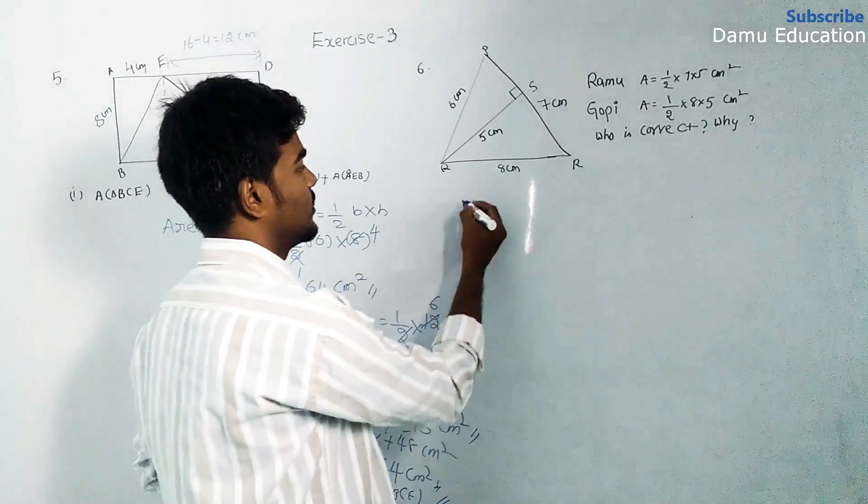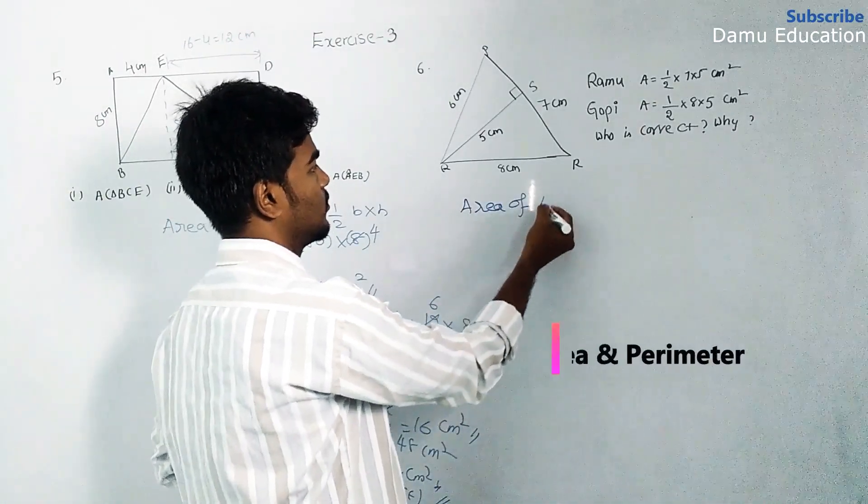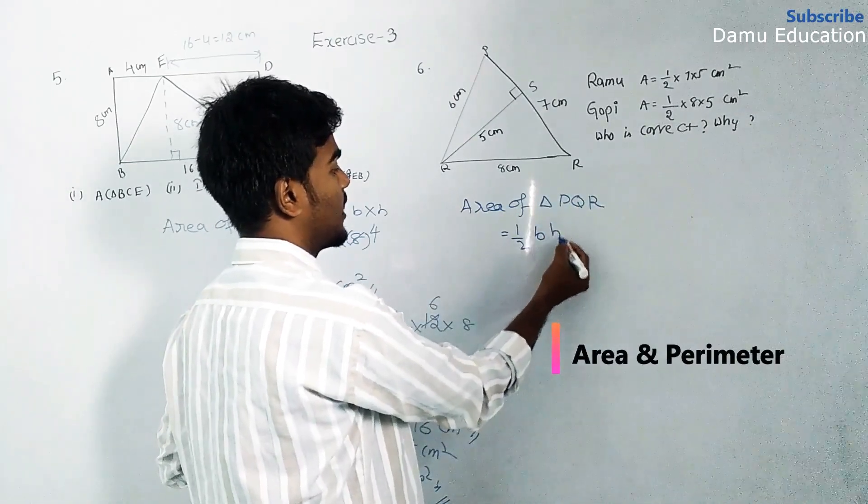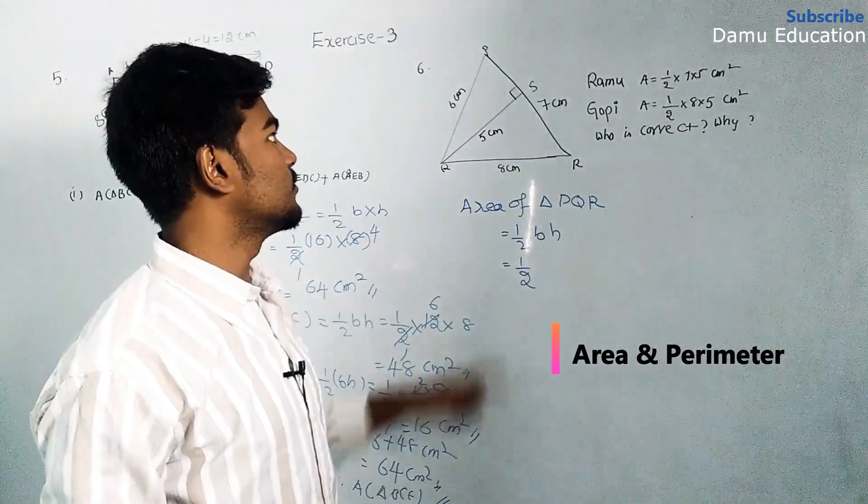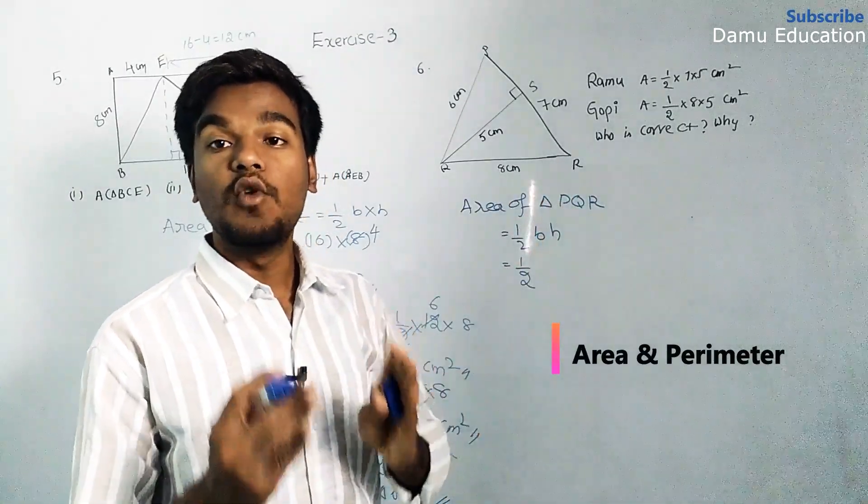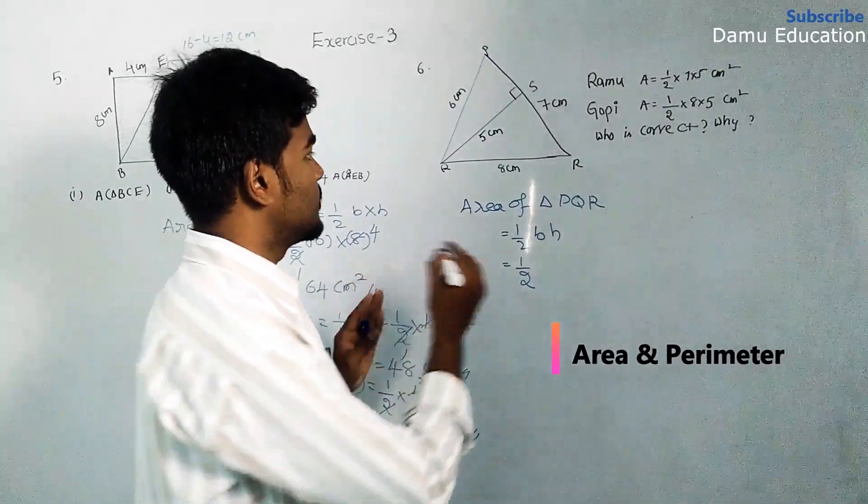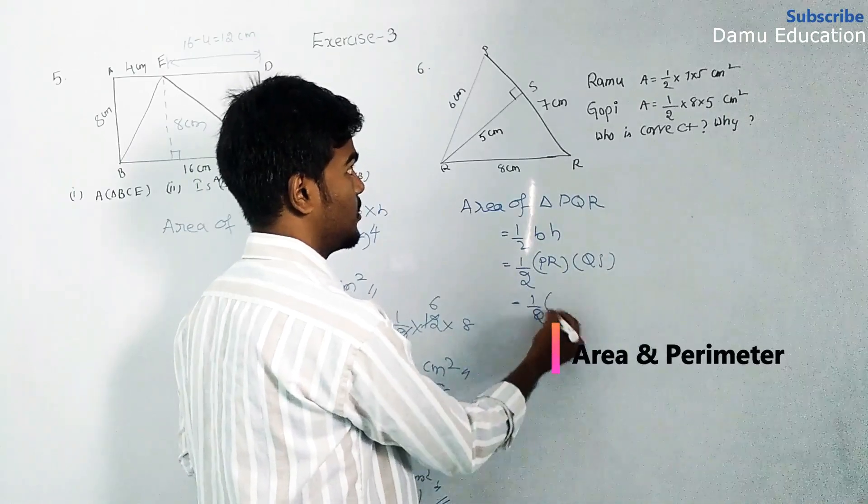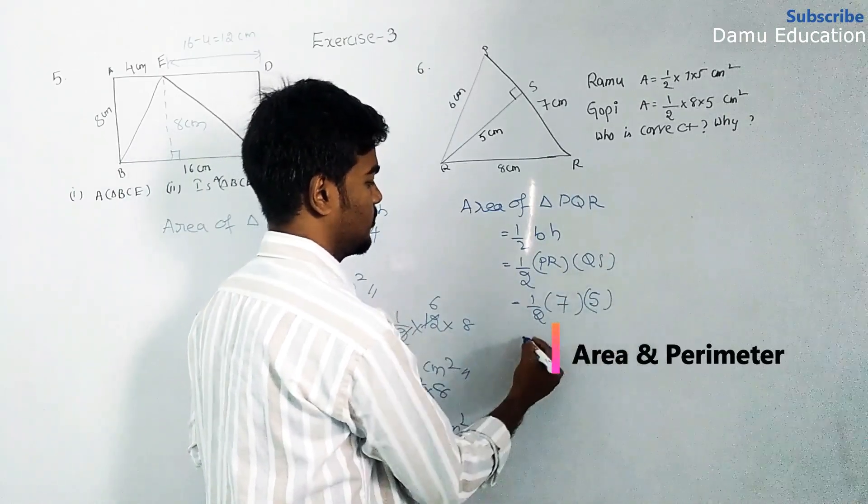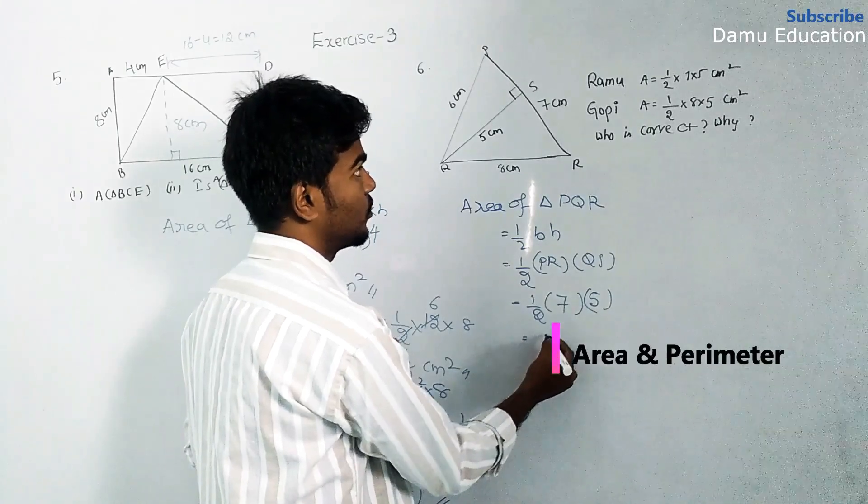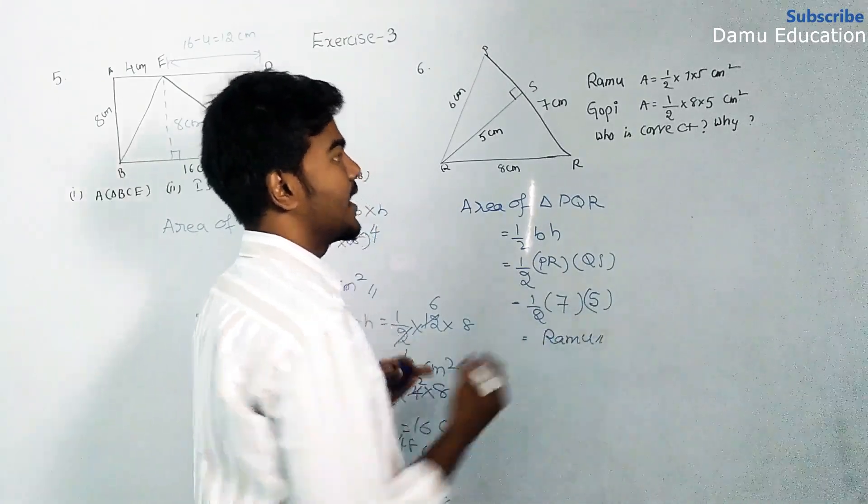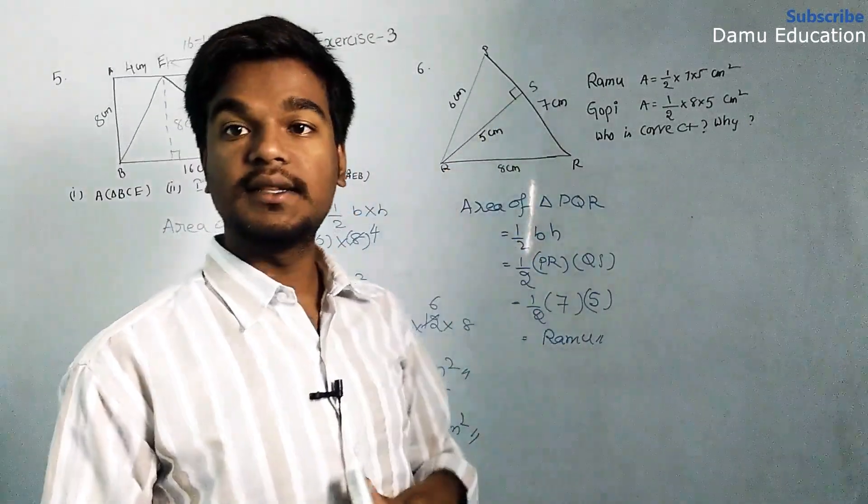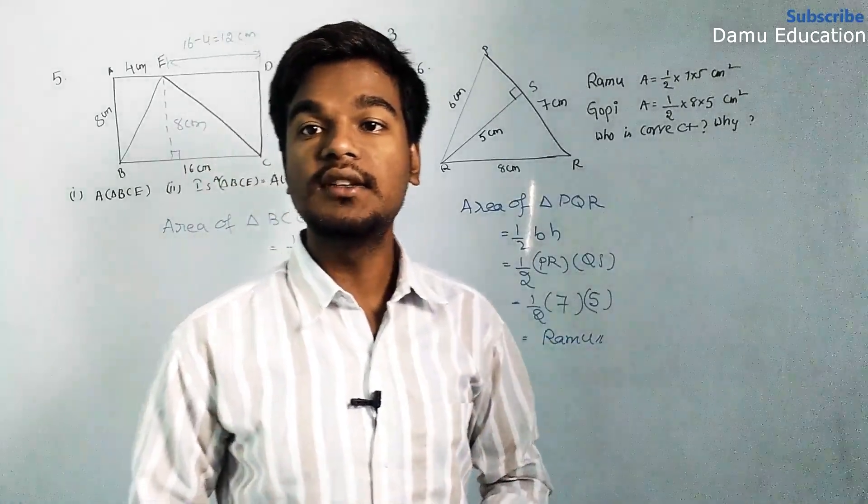What is the area of triangle PQR? Half into base into height. Half into base PR, which is 7 cm, into height QS, which is 5. So half into 7 into 5. We take PR as base, so the corresponding height is QS.